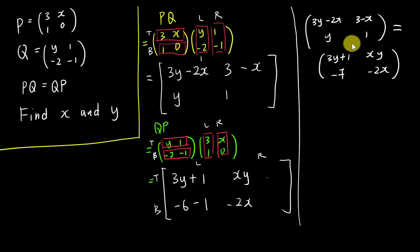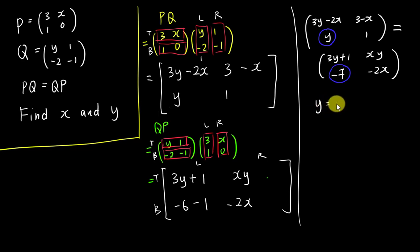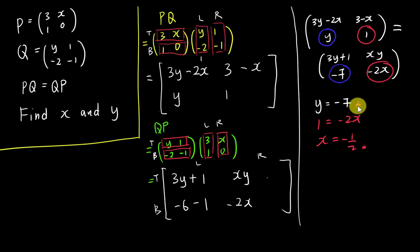The good thing about matrices is each position has its specific value. I'll choose the third position — bottom-left — to compare: Y equals negative seven. So my first answer is Y equals negative seven. Then for the last position — bottom-right: one equals negative two X, so X equals negative one over two. I've already solved for both X and Y. In an exam, always choose the easiest positions to compare.